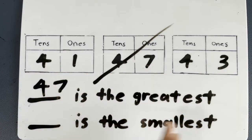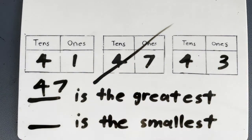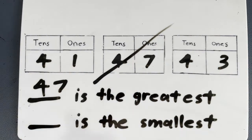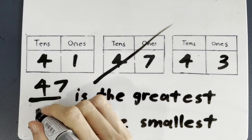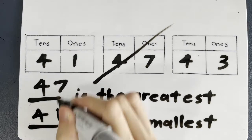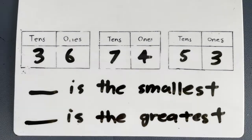Now tell me, which is the smallest? Look at the ones — don't look at the tens this time. So 1 is the smallest. So 41 — cancel that off and we are done. 47 greatest, 41 smallest.